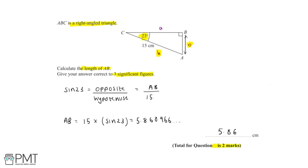This question is worth two marks, so let's take a look at where these marks are allocated. The first mark is for writing down that sine 23 equals AB over 15, which we've clearly shown in our working. And the second and final mark is for getting the correct answer of 5.86 centimetres.